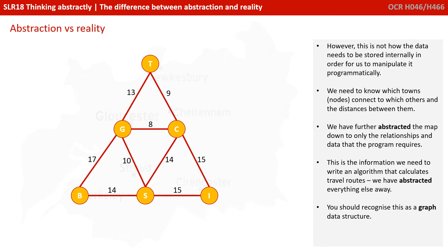This is the information we need to write an algorithm that calculates travel routes. We've abstracted everything else away. You probably recognise this as a graph data structure.